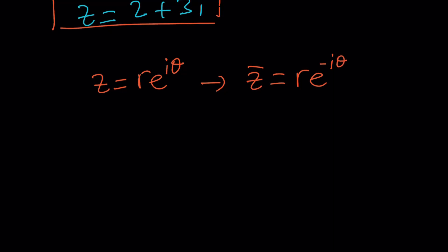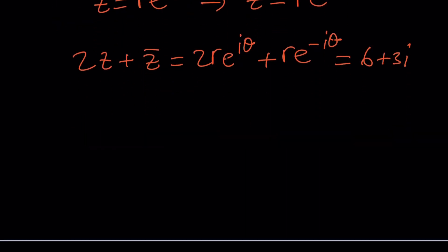So now if you plug these into our equation, remember, it was 2Z plus Z bar. And now this is going to be 2r e to the i theta plus r e to the power negative i theta. And this is equal to 6 plus 3i. Now the problem here is to be able to solve this, we need to solve the quadratic equation.